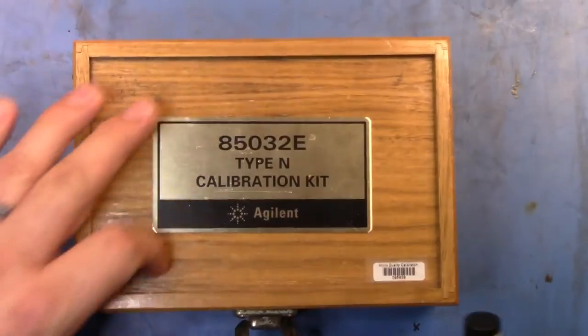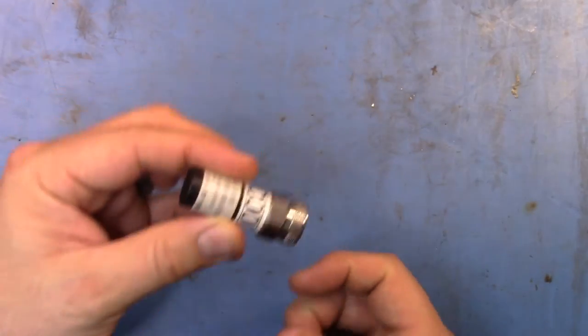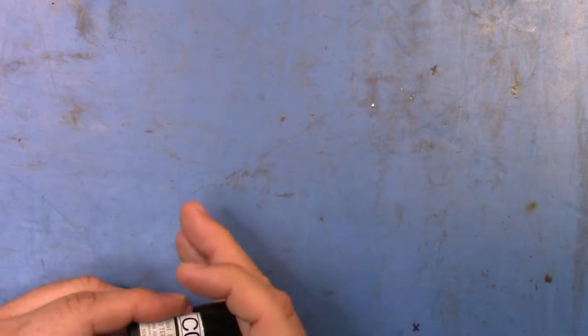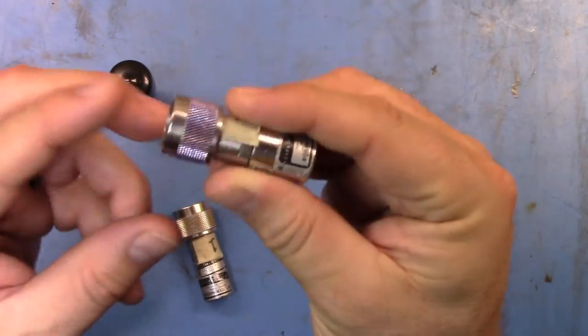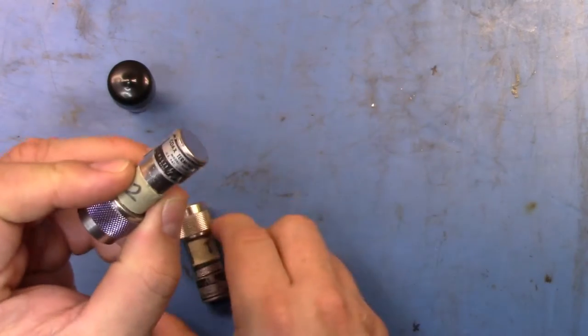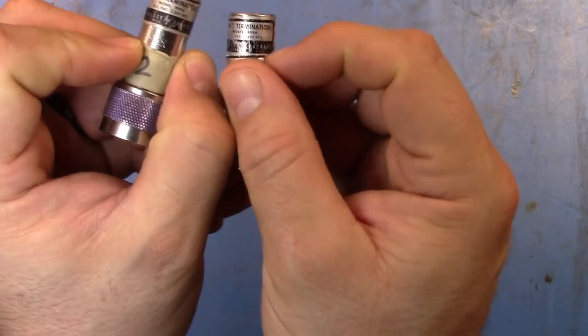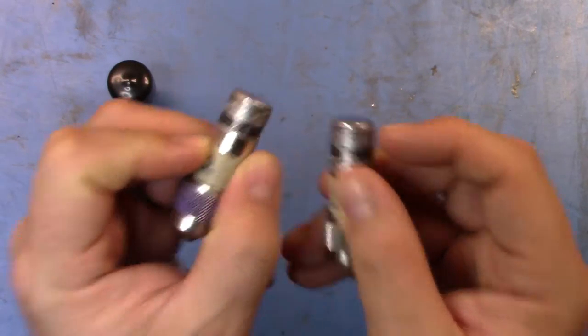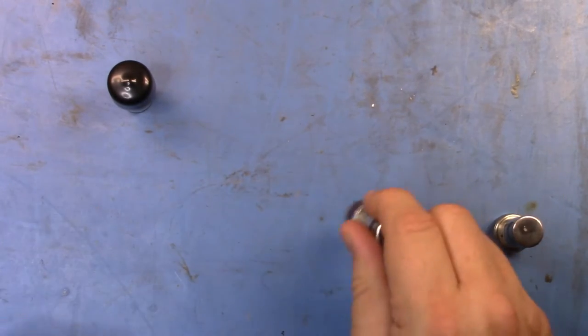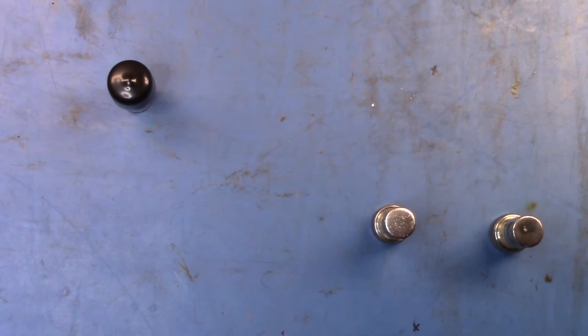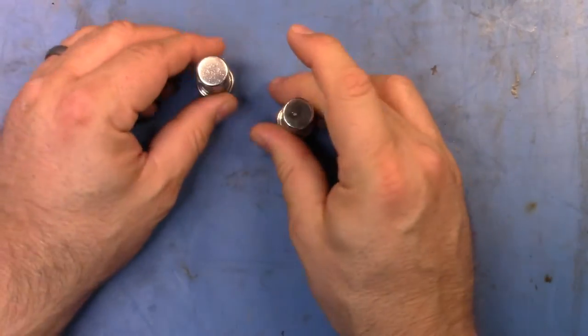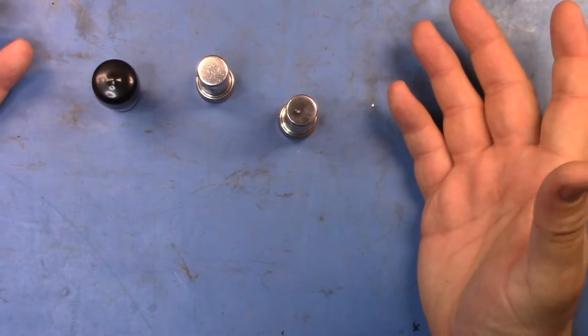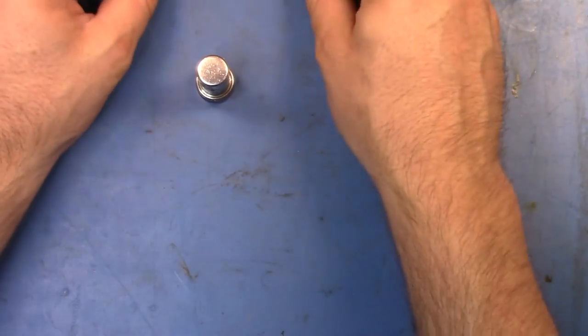This is the 909F. I also have two of these loads here, HP 909A loads, and they're 50 ohm loads. These are actually all good from DC to 18 gigahertz.